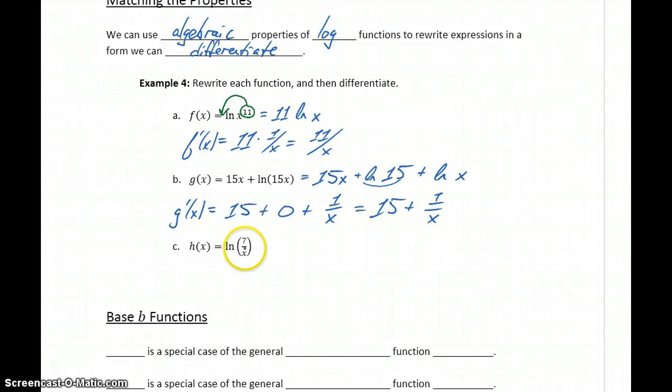There's also an algebraic property for logs that lets us break up this division problem. So instead of writing this as the natural log of 7 divided by x, we can rewrite it as the natural log of 7 minus the natural log of x. So again, if we have two quantities being divided, we can break that up with subtraction.